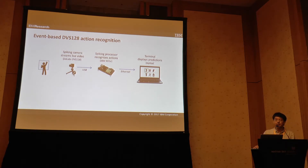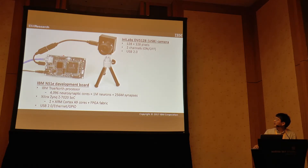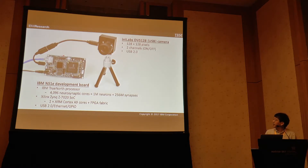We're sending the predicted gestures over Ethernet to a laptop, which is only used for visualization. The development board has a single TrueNorth processor with 4,000 cores and a million neurons. There's also a Zynq system-on-chip to handle the interfaces because the TrueNorth chip is a pure array of cores with no drivers for USB or Ethernet — that's what the Zynq is for. As a consequence, the board burns about a 3-watt envelope, and the vast majority of that is the Zynq processor.